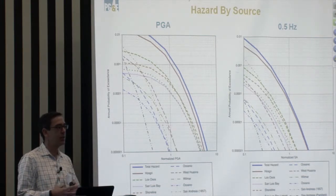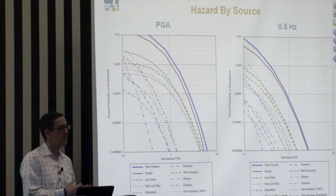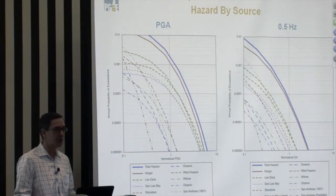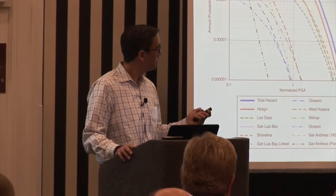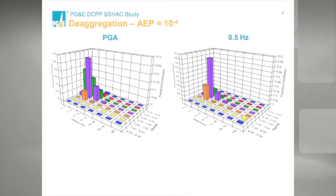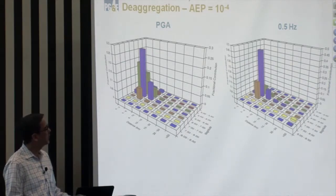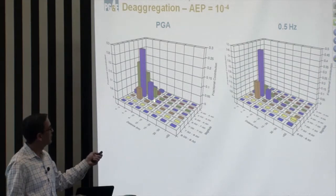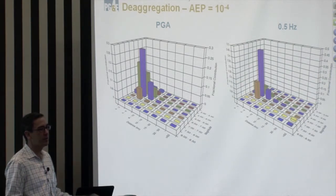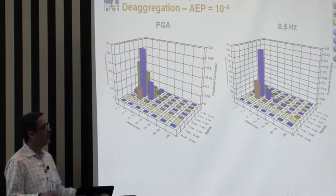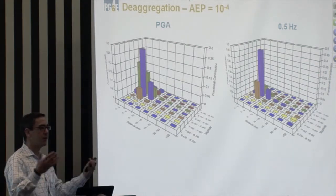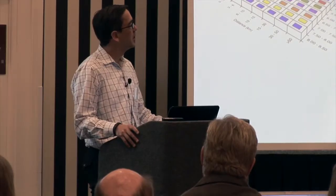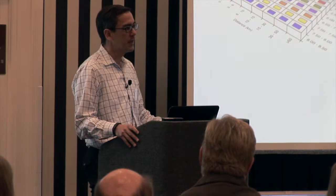For my sensitivity analyses, I'm basically running those four sources and doing that with the different variations of the ground motion models to see how that impacts the hazard at the end. Looking at a de-aggregation plot, we can see that at 10 to the minus 4 for the probability level — PGA on the left and half a hertz or two seconds on the right — most of the hazard is coming from those four sources very close to the site. So rather than running the full regional source model, let's isolate those sources and do the sensitivity on the ground motion aspects.